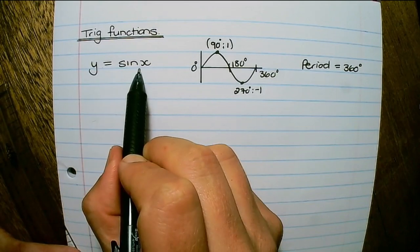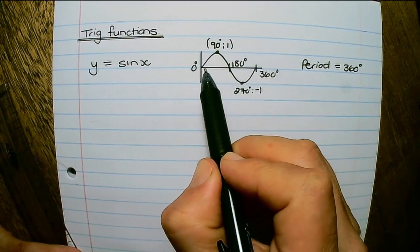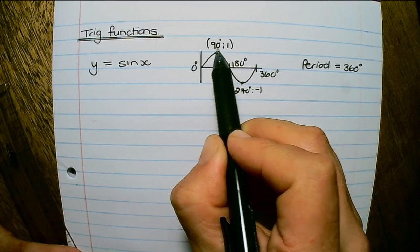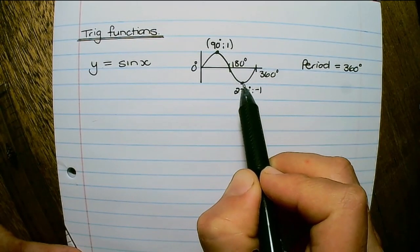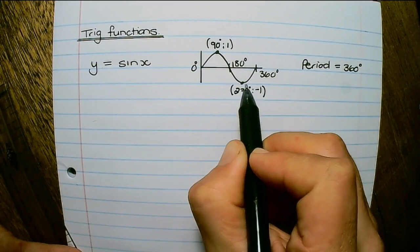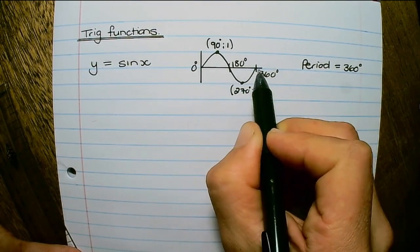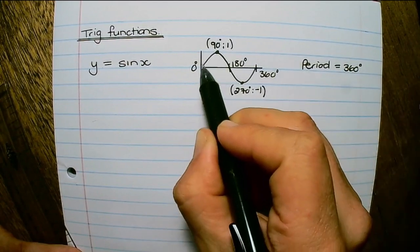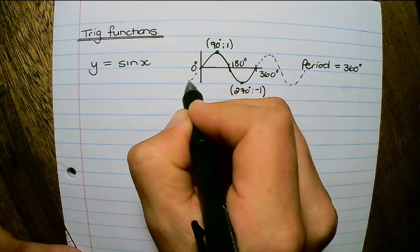First up, we have y equals to sine x. The basic trig function for y equals sine x starts at 0 and 0 degrees, moves to a turning point at 90 degrees and 1, meets the x-axis again at 180 degrees, then a minimum value at 270 degrees and negative 1, and completes a full cycle at 360 degrees. This cycle is called a period — it takes 360 degrees to complete one full cycle, and can continue indefinitely to the right or to the left.